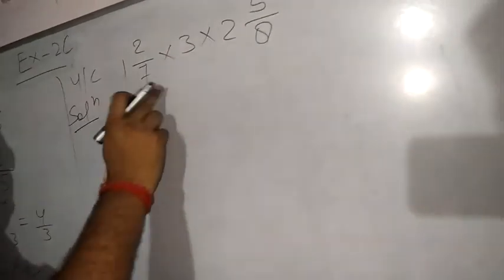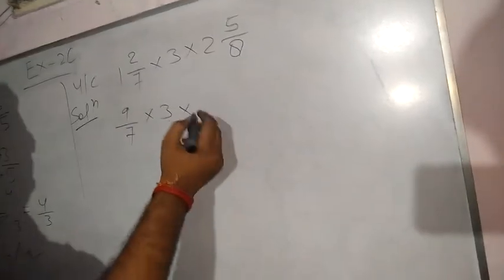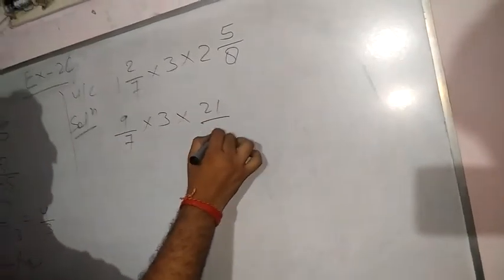This, change into improper: 7 × 1 = 7, plus 2 = 9/7, into 3, into 8 × 2 = 16, 16 plus 5 = 21/8.